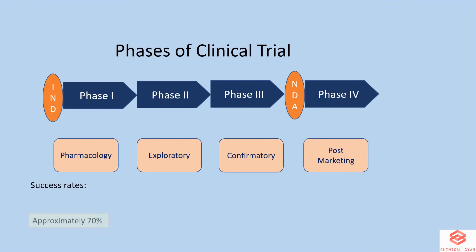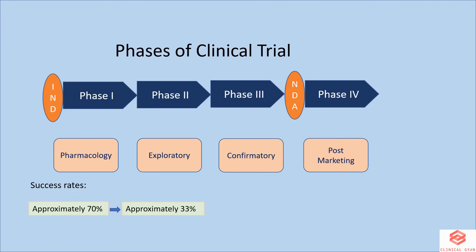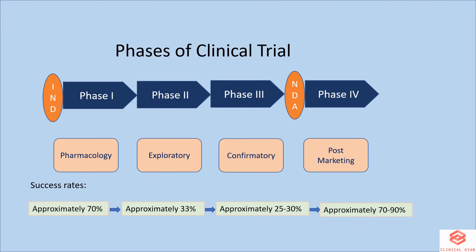Regarding success rates, approximately 70% of drugs from Phase 1 move to Phase 2. About 33% move to Phase 3, and about 25 to 30% move to Phase 4. In Phase 4, about 70 to 90% of drugs successfully stay in the market, and the rest could be recalled from the market if safety is at risk.